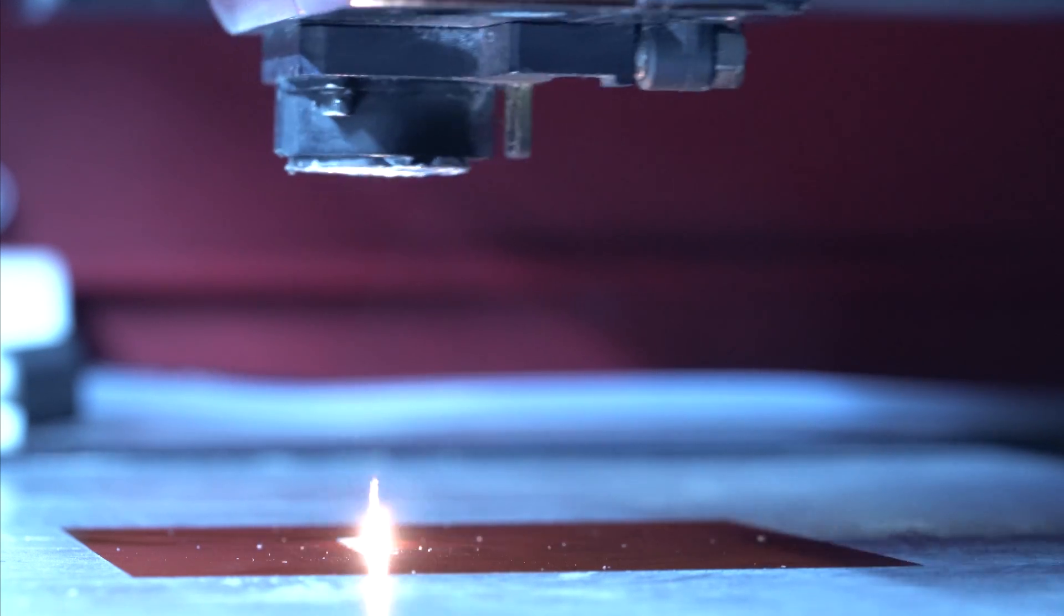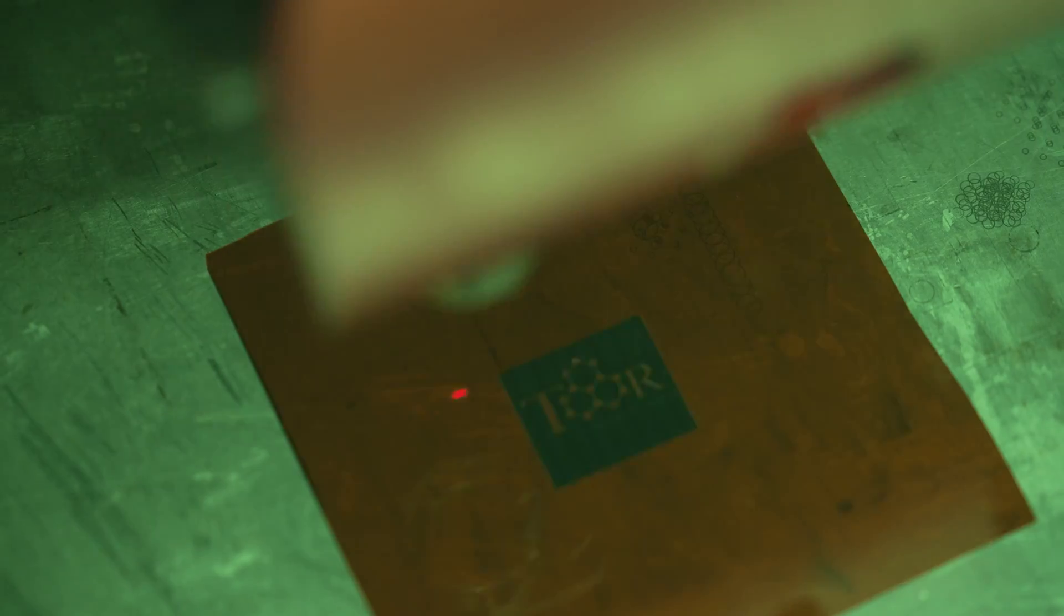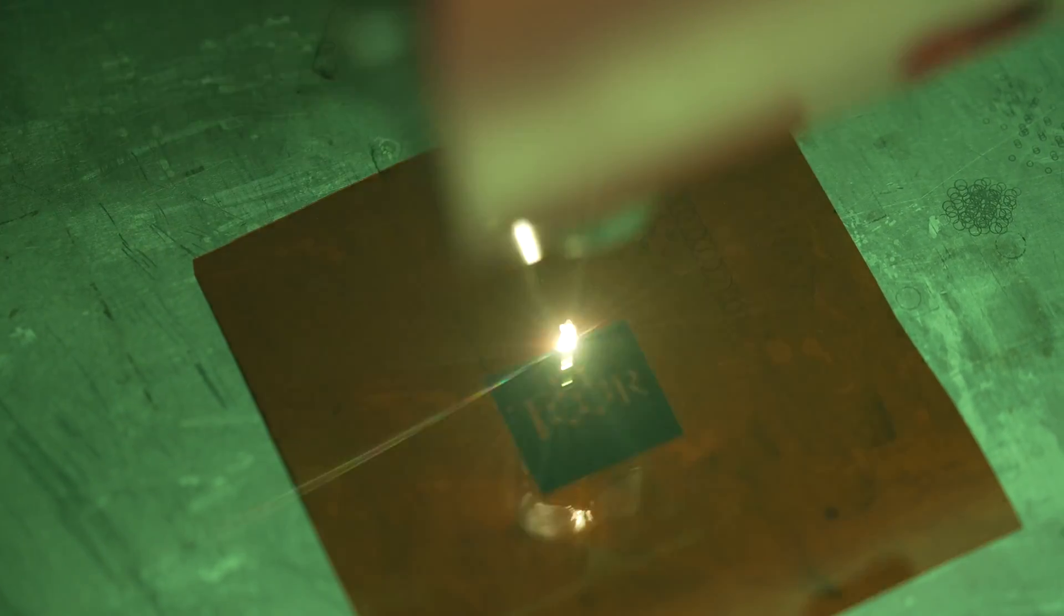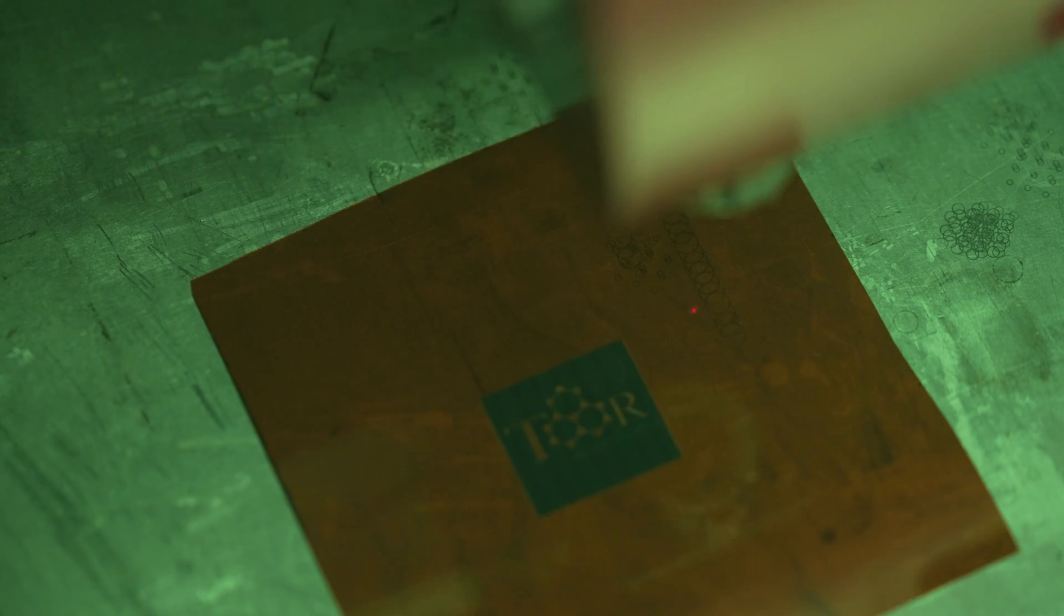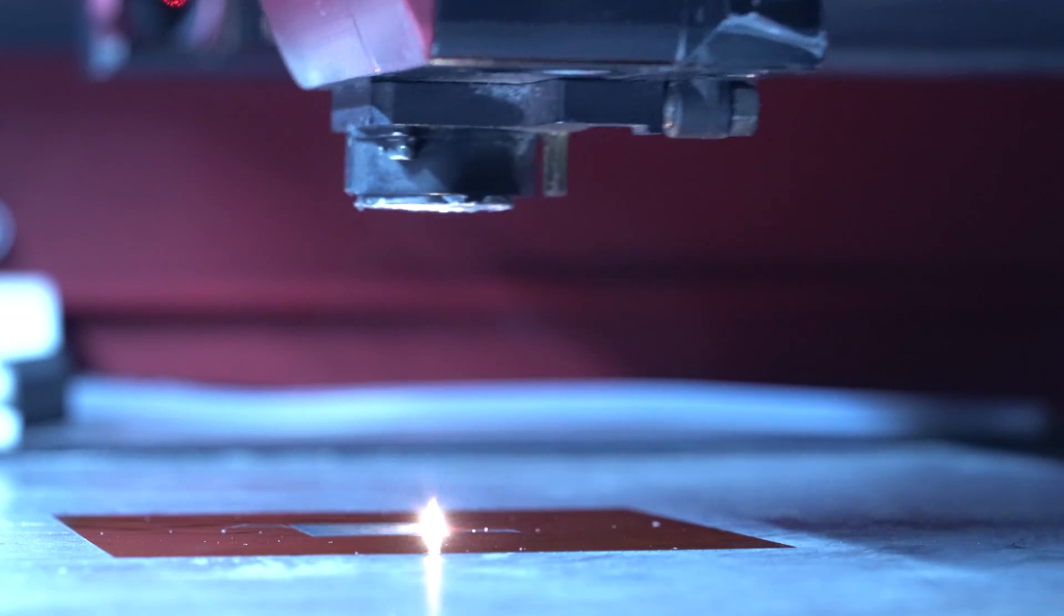Graphene has a lot of unique properties, especially for a substance that's so light. Because it's only made of carbon, there's no extra metals or anything in it, it actually is very low density, given especially all the things it can do. It has very high conductivity. It also conducts heat very well. It's also extremely strong.